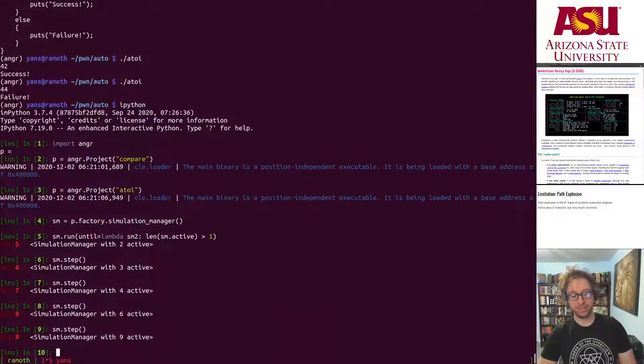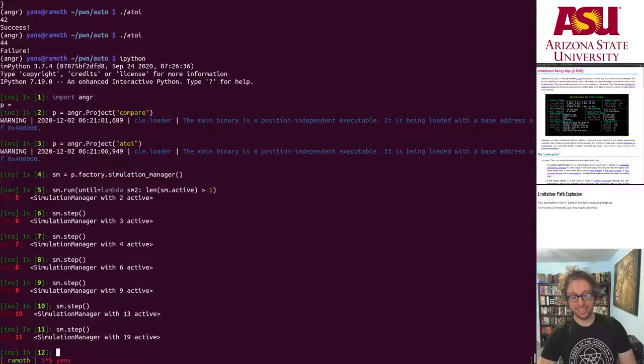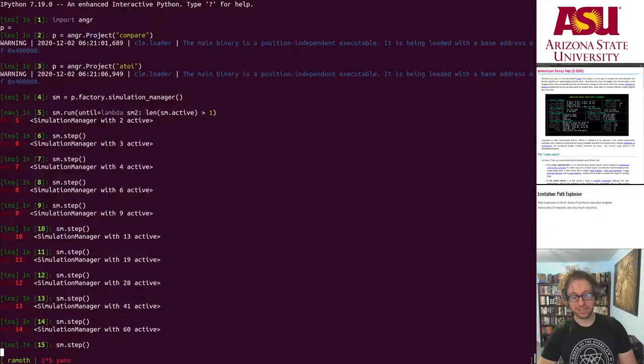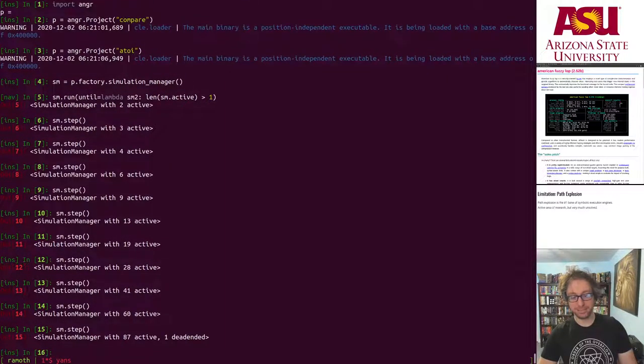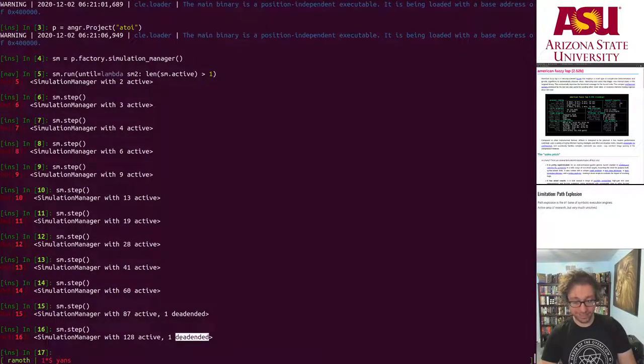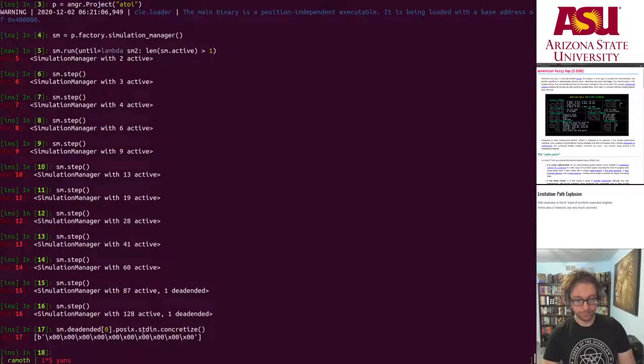Create the simulation manager. Let's run until there's more than one path. Okay there are two paths now. Let's see what happens when we step. We can see the path explosion happening in real time. There it is, this is all inside the A2I function.